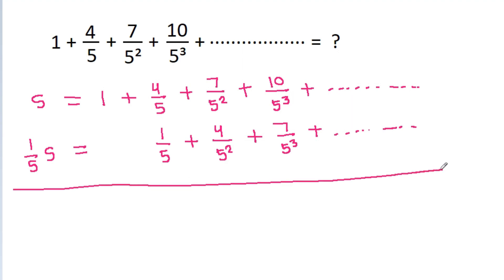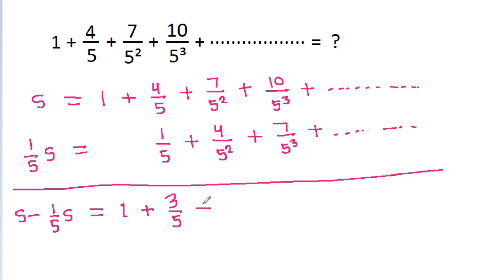If we subtract both equations, then S minus (1/5)S will be equal to: 1, minus (4/5 - 1/5) = 3/5, minus (7/5² - 4/5²) = 3/5², minus (10/5³ - 7/5³) = 3/5³, and so on.